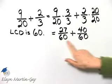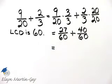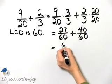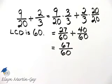Notice now we are adding, and the denominators are the same, so we have the right to combine the numerators. Twenty-seven plus forty, that is sixty-seven over a denominator of sixty.